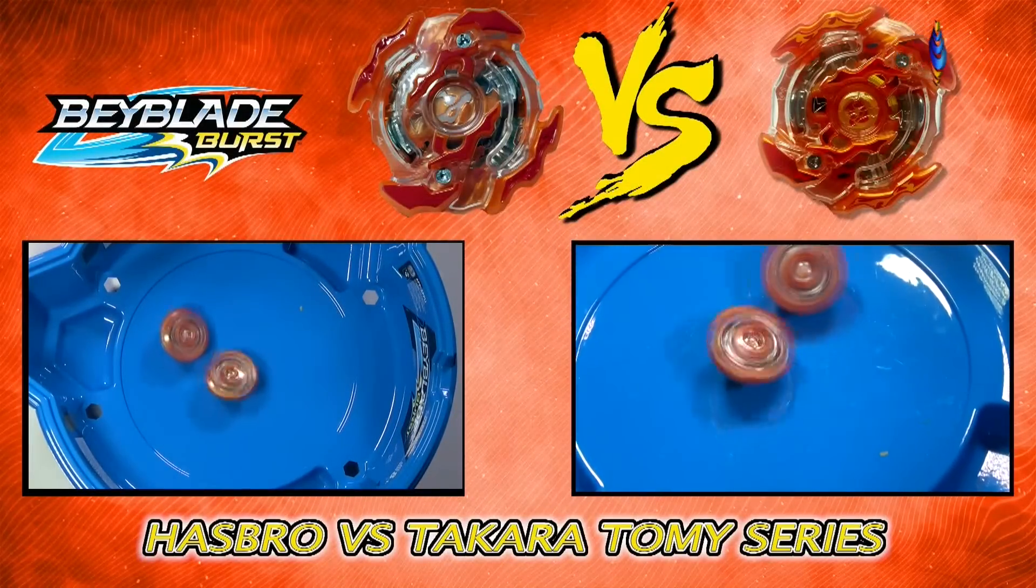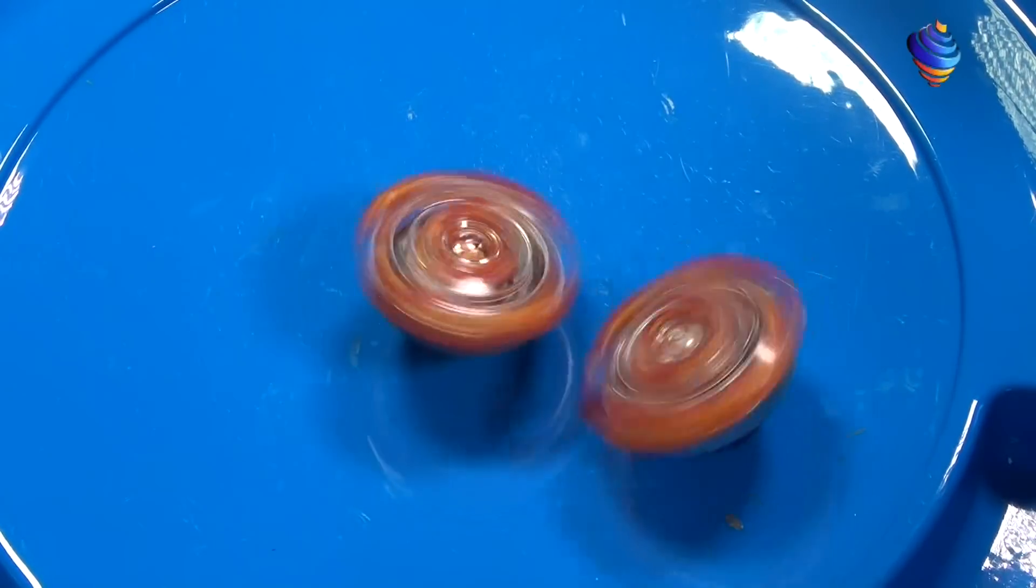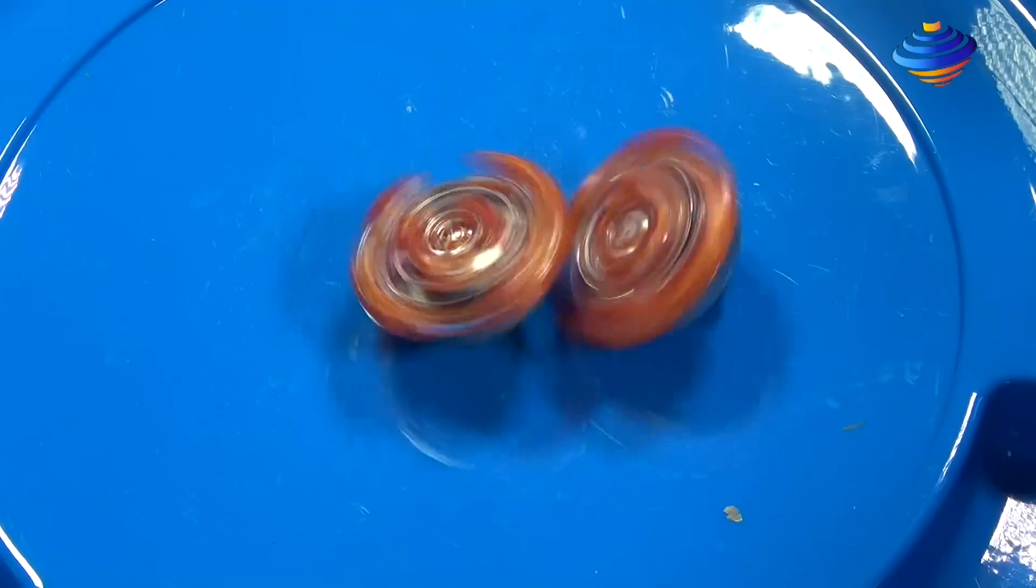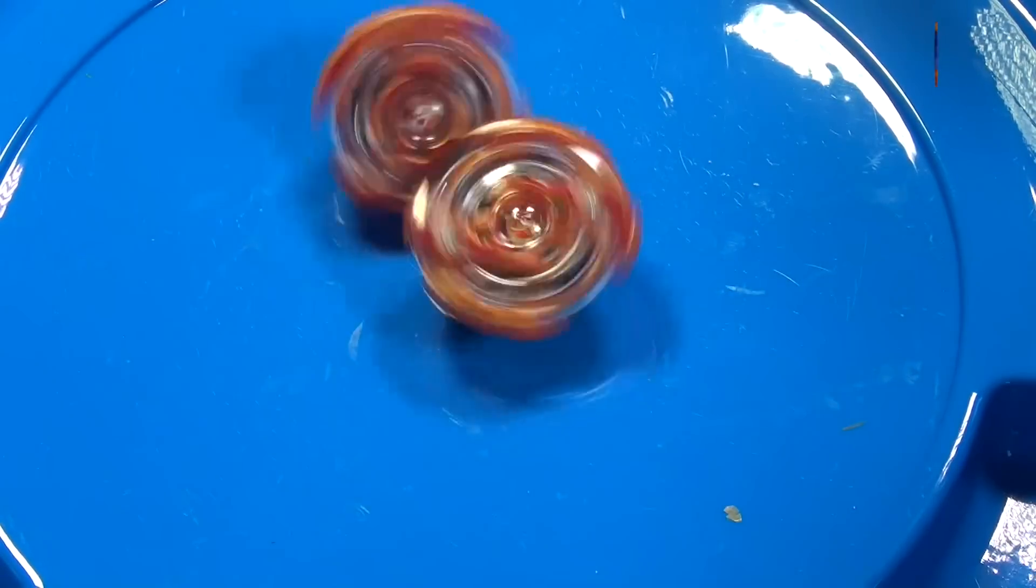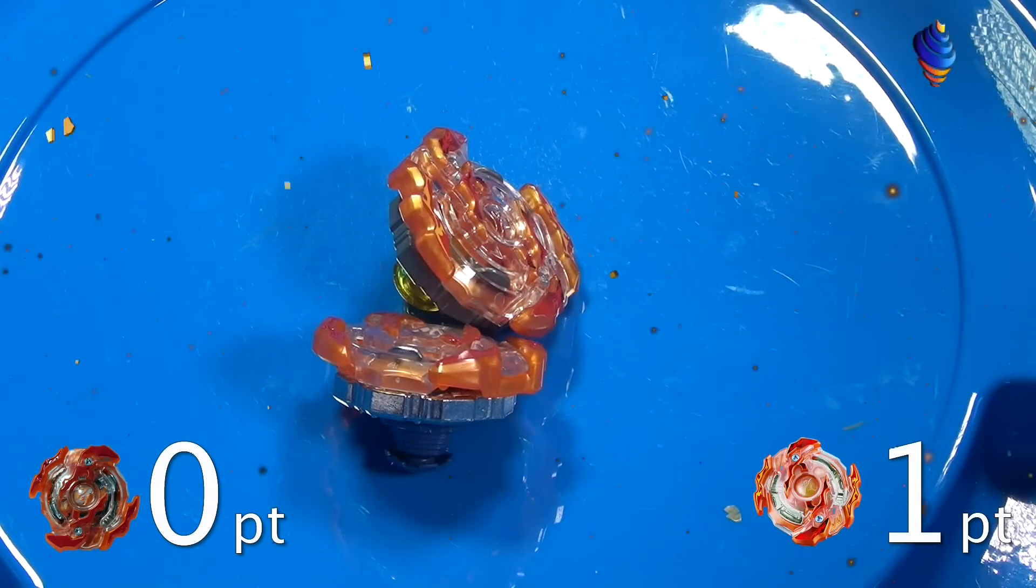Both beys are clashing in the bey stadium. And which one will win? So Rock Tavor is circling around Rising Ragnarok. Not really doing much. Few attacks here and there. And it looks like Rising Ragnarok wins with a survivor finish. So the score is 0-1.